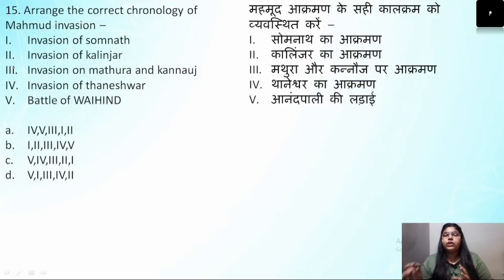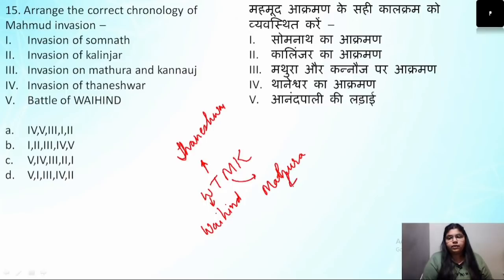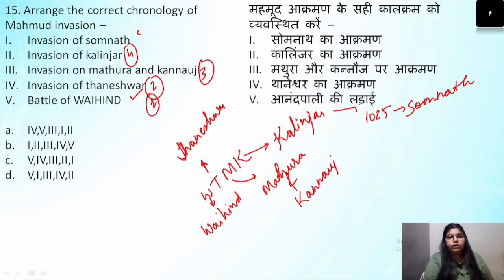Remember the chronology of battles: W, T, M, K — W for Battle of Vahind, T for Battle of Thaneshwar, M for Mathura and Kannauj, K for Kalenjar. First was the Battle of Vahind, second was Battle of Thaneshwar, third was Mathura and Kannauj, fourth was Kalenjar, and fifth was Somnath in 1025. So reading from bottom to top in the question, the correct answer is option C: five, four, three, two, one.